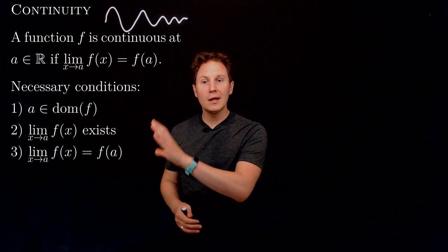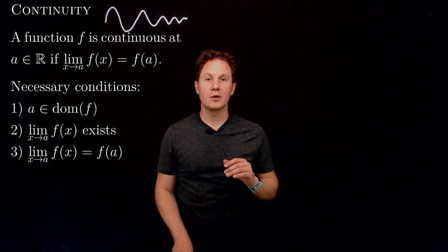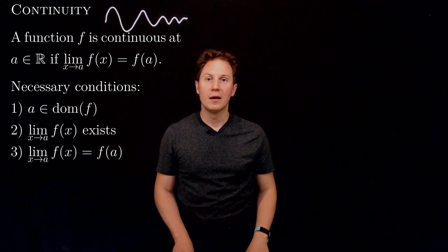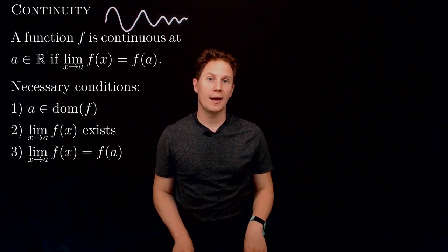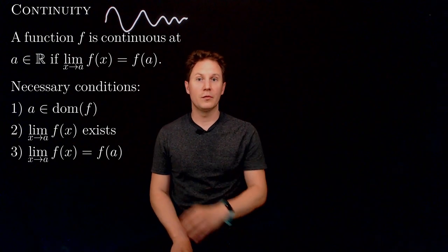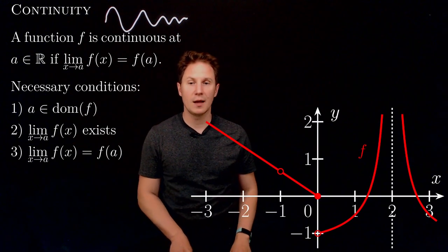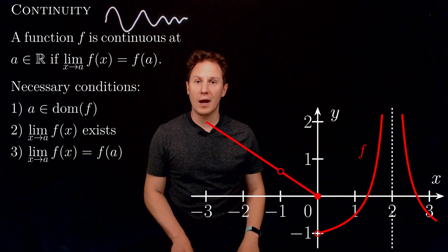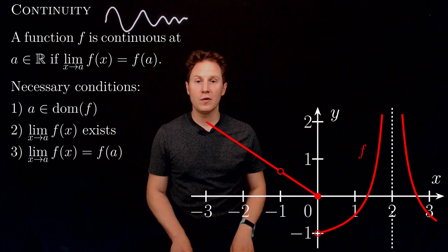Now if any of these conditions break down, then we say that the function is not continuous at x equals a, that it is discontinuous at a, or it has a discontinuity at a. This can happen in different ways depending on which condition breaks down. Here you can see the graph of f in red, and it has several discontinuities at various points.